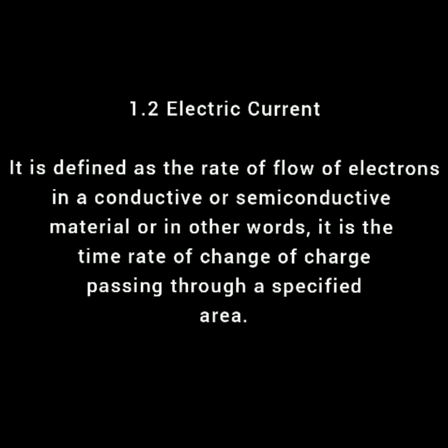Then we move to electric current. Current is defined as the rate of flow of electrons in a conductive or semi-conductive material, or in other words, it is the time rate of change of charge passing through a specified area. The moving charges may be positive or negative. The area mentioned here may be the cross-sectional area of a wire or some other suitable spatial area where charges are in motion.